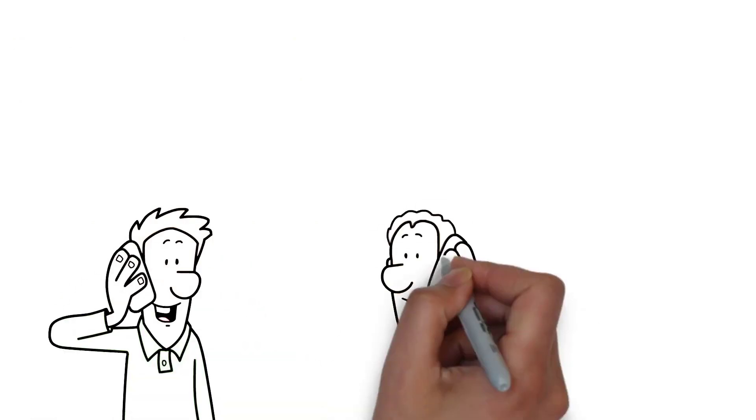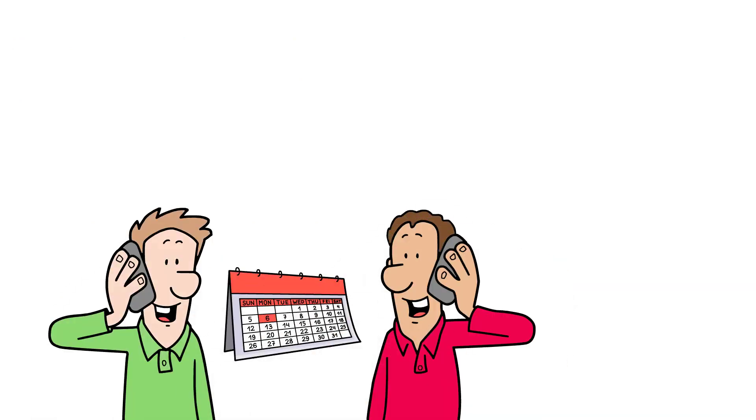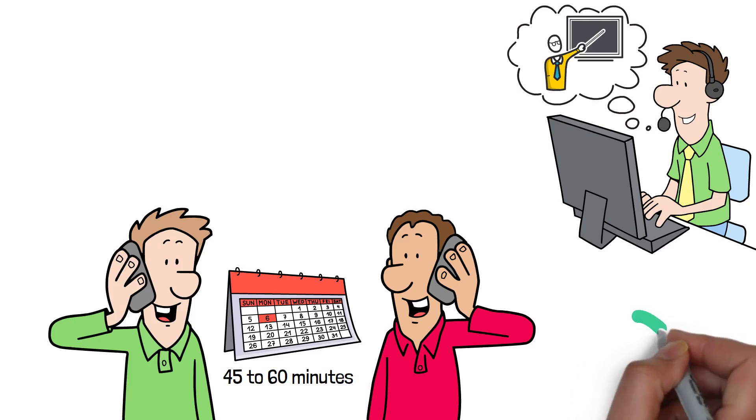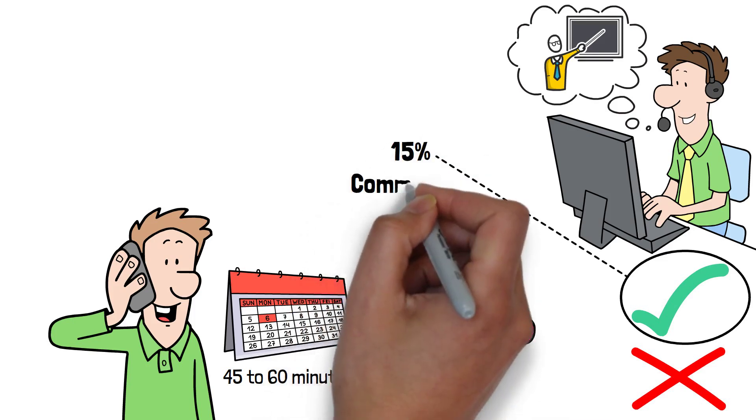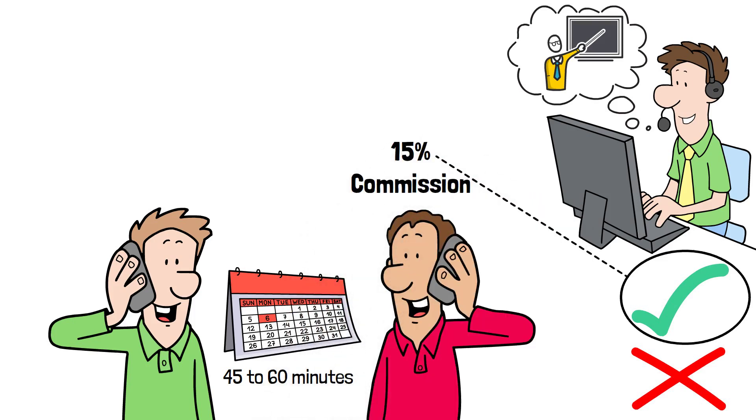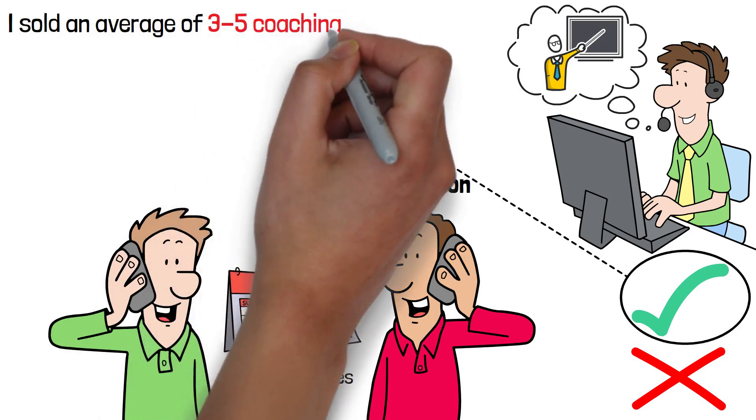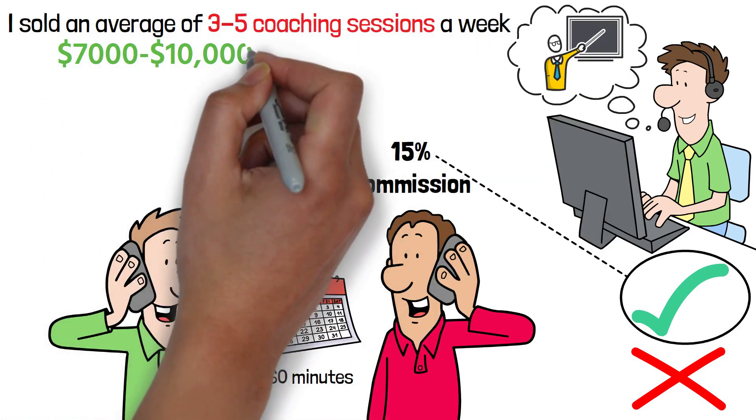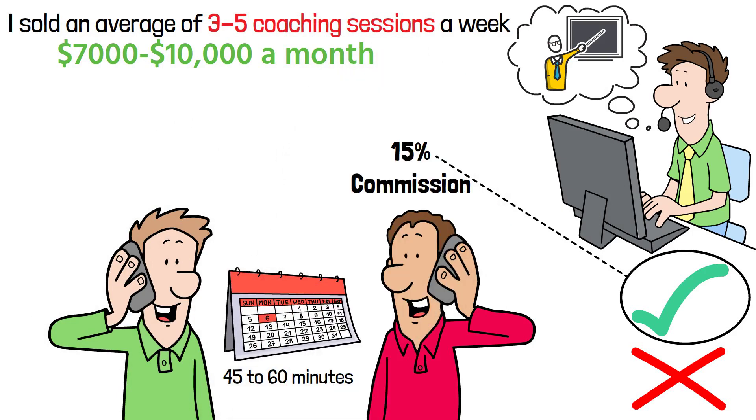I would get 4 to 5 client calls every day automated in my calendar, and I would look at how we could help them and offer them our coaching. These conversations went 45 to 60 minutes, and at the end, they either decided for or against our coaching. If they chose our coaching, I received 15% commission of the purchase price. I sold an average of 3 to 5 coaching sessions a week, which earned me an average of between $7,000 to $10,000 a month. And I did all of this on top of my studies.